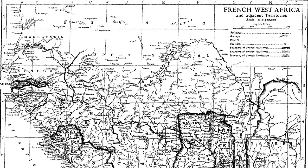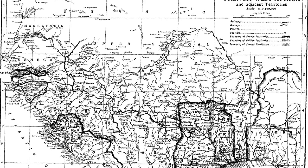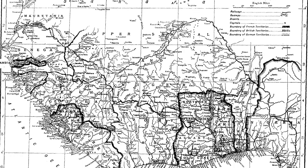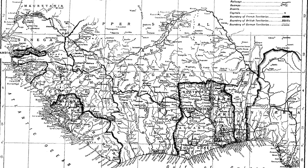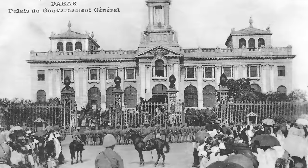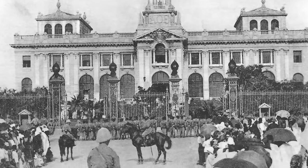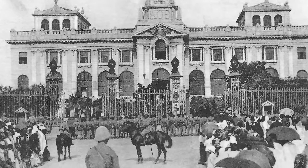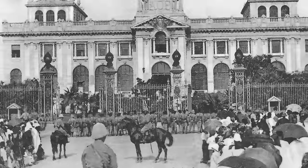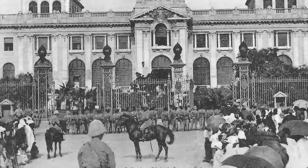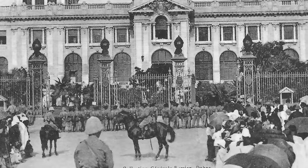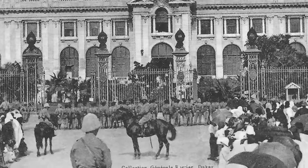A second example of negotiated independence is French West Africa, which included places like Senegal, the Ivory Coast, Niger, etc. France had ruled these colonies since the 1800s, but did so with relatively small occupational forces. In order to maintain dominance, the French relied on cooperation with local governments and chiefs. However, once this relationship began to crumble and France could no longer maintain power without devoting huge amounts of resources to it, they negotiated independence in most of these nations by 1959.